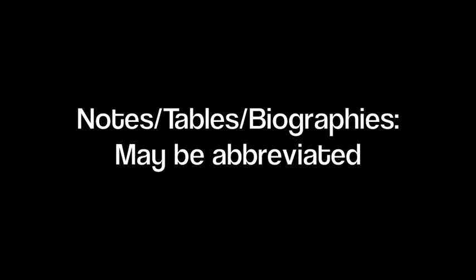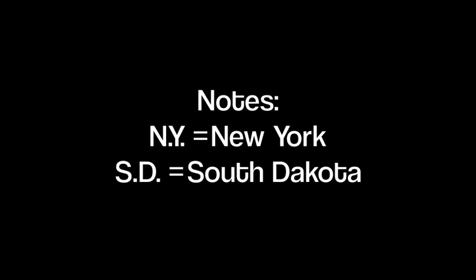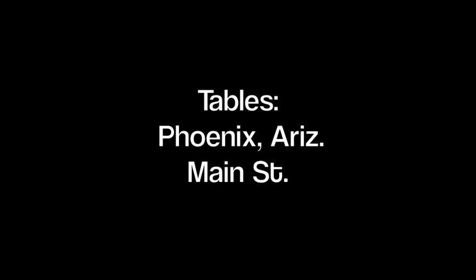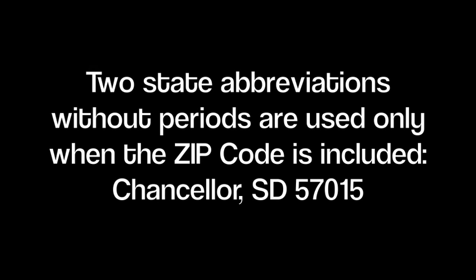When writing notes, tables, and biographies, geographical terms may be abbreviated. Two-letter state abbreviations without periods are used only when the zip code is included. For example, Chancellor SD 57015.